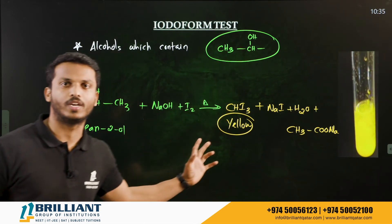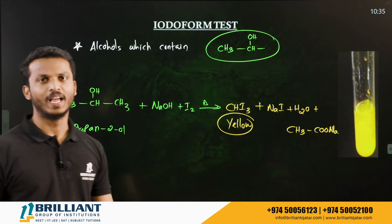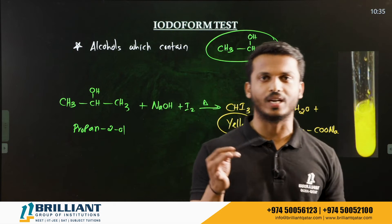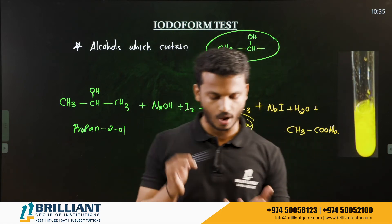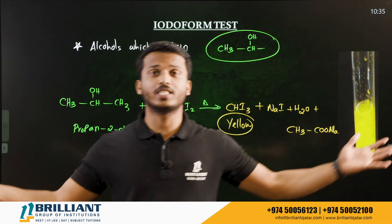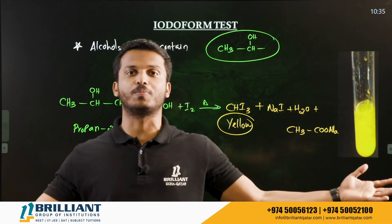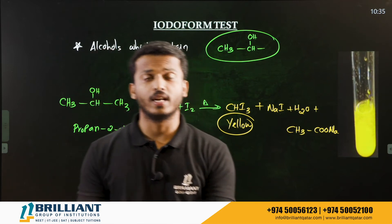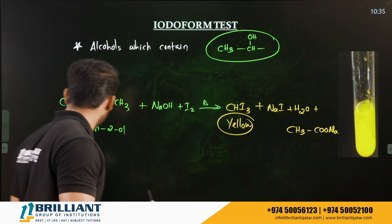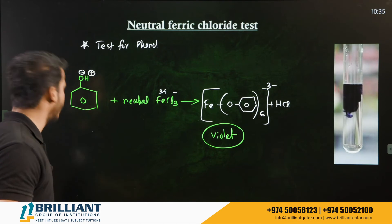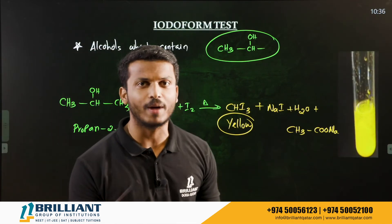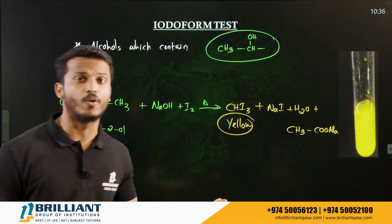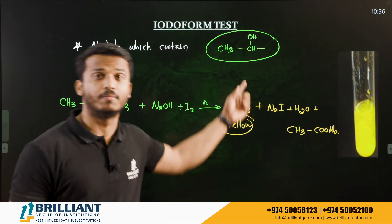To summarize: the three distinction tests in the alcohol, phenols, and ether chapter are — (1) Lucas test, to distinguish primary, secondary, and tertiary alcohols; (2) neutral ferric chloride test, given only by phenol with a violet coloration; and (3) iodoform test, given by alcohols containing the CH₃CHOH group.